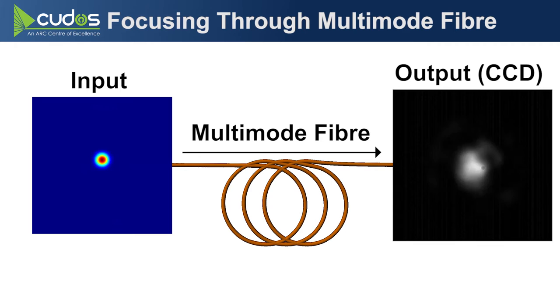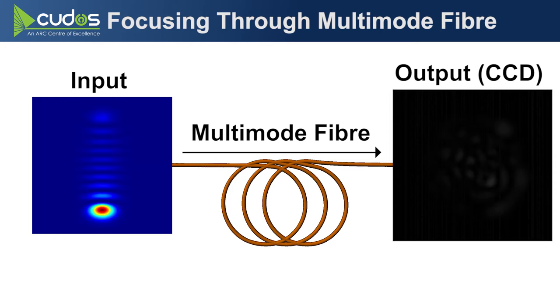For instance, here we've got a spot being scanned across the core of multimode fiber at one end. Now, that spot is made up of many different modes. All those modes have different group velocities, and they're all going to undergo mode coupling along the length of the fiber due to bends, twists, etc. And what you end up with is just a speckle pattern, basically, at the other end.